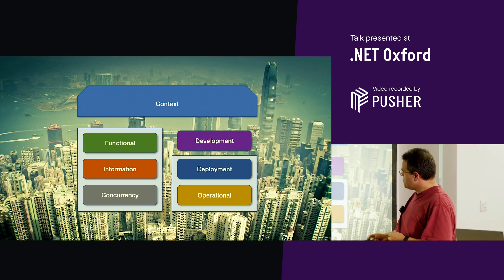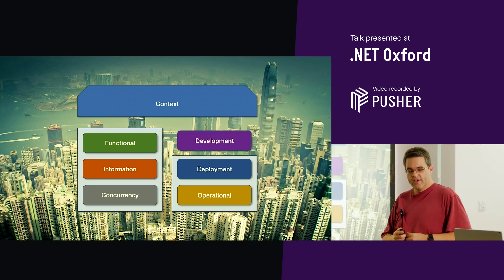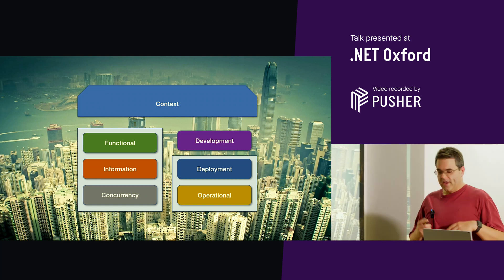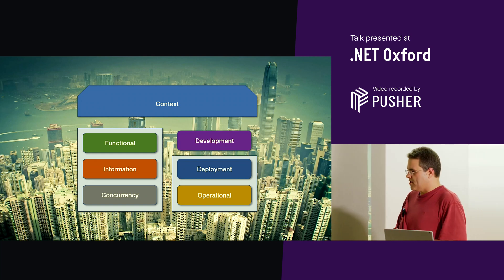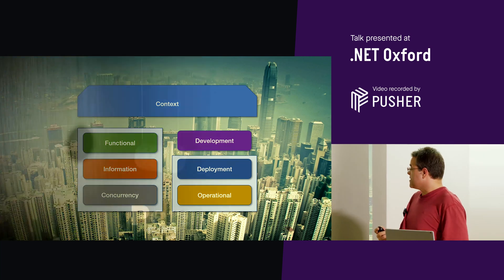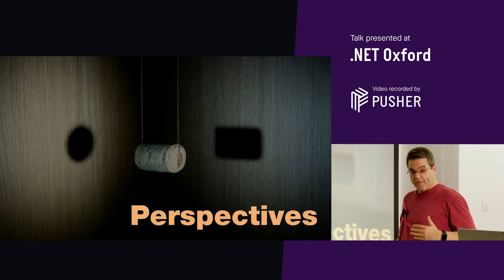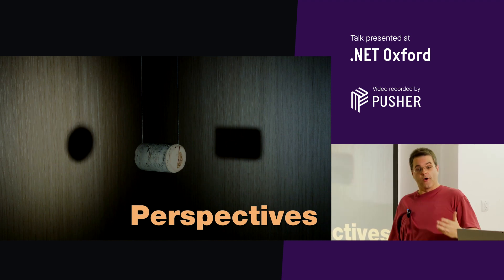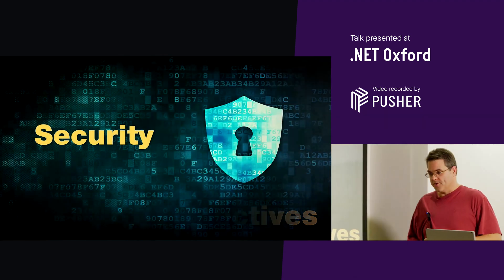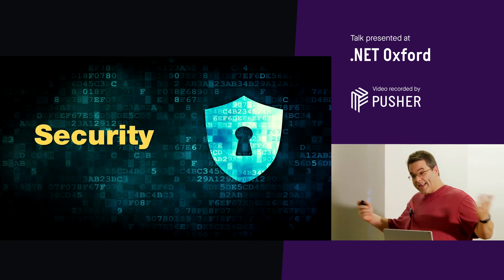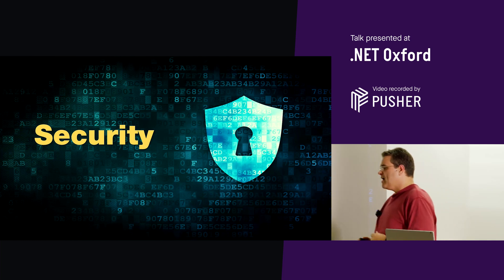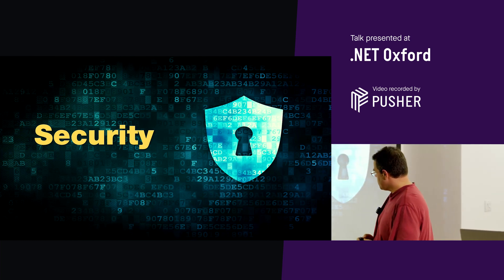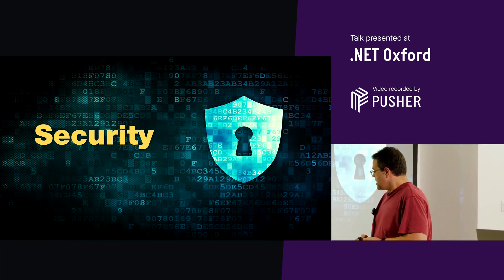So these seven views together give us a way of slicing up our architecture and looking at it in different ways. But across all of that, we have perspectives — sometimes called the non-functional requirements or the 'ilities.' I'm going to go through the four most important ones.